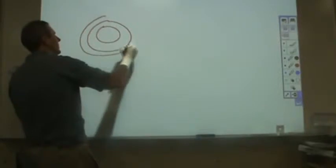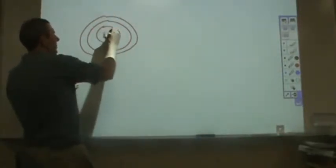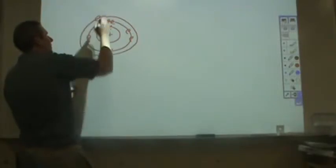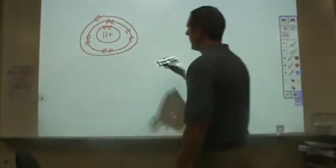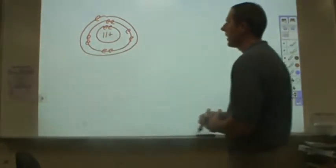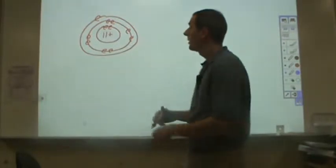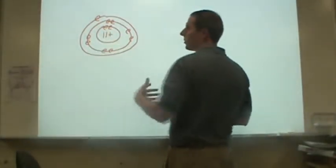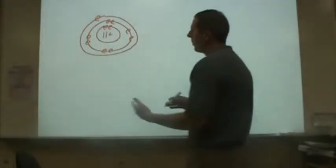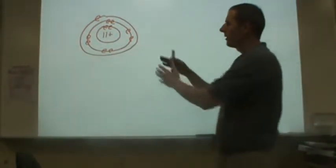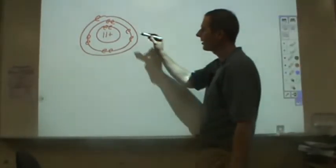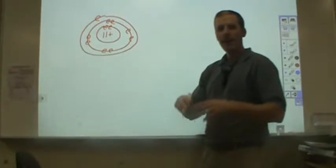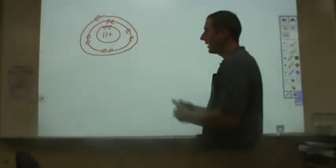When we draw a sodium atom using a Bohr model, we have eleven protons, two electrons in the first shell, eight electrons in the second, and one electron in the 3s1 orbital. We draw those electrons in a paired sense, as a stationary state — this electron is here, this electron is here. To a new student, those two electrons look really close and therefore must repel a lot. But you have to break free from that frame of reference and understand that these electrons are not stationary — they are constantly in motion, and we have to average things out over time.